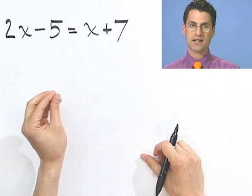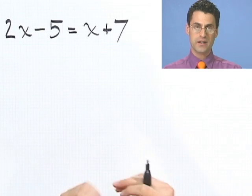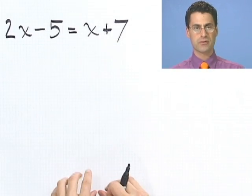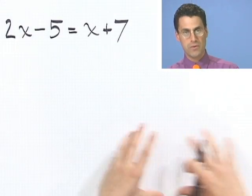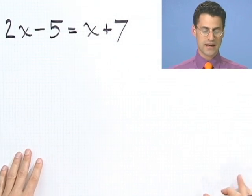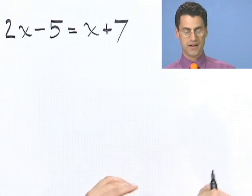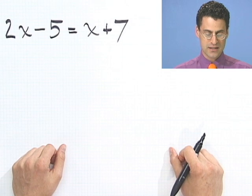So what we want to do is we want to isolate x, have x all by itself, and then figure out what x is. At the end of the day, after work, we want to have x equals a number. So what I want to do is try to get x's on one side, everything else on the other.